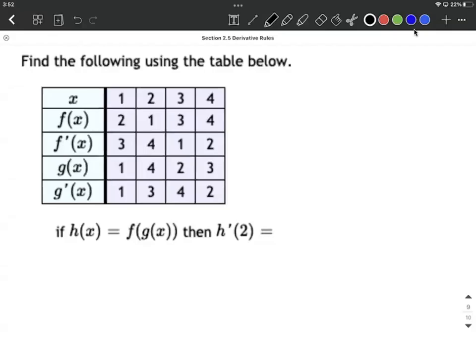Okay, we're given a table, and we've defined h of x to be a composition of functions, this f composed with g of x. So our goal here is to use the table and find the derivative h prime of 2. So first, let's go ahead and write this out. We want to use the chain rule to accomplish this goal.